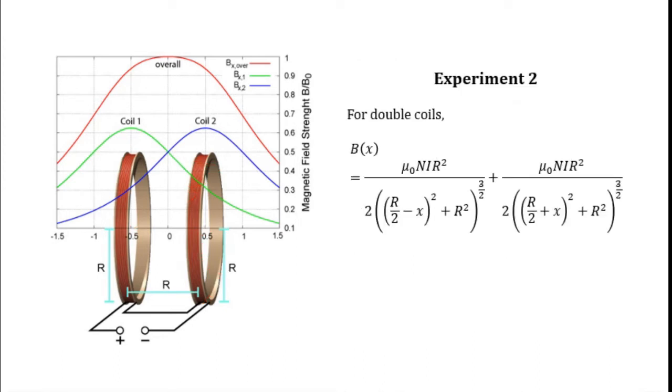For experiment number two, you're going to be dealing with the Helmholtz coils. The magnetic field strength B as a function of x position is even more complicated.